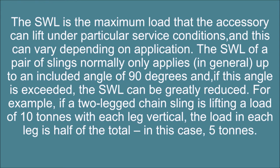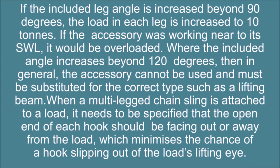For example, if a two-legged chain sling is lifting a load of 10 tons with each leg vertical, the load in each leg is half of the total — in this case, 5 tons. If the included leg angle is increased beyond 90 degrees, the load in each leg is increased to 10 tons. If the accessory was working near to its SWL, it would be overloaded. Where the included angle increases beyond 120 degrees, the accessory cannot be used and must be substituted for the correct type, such as a lifting beam.